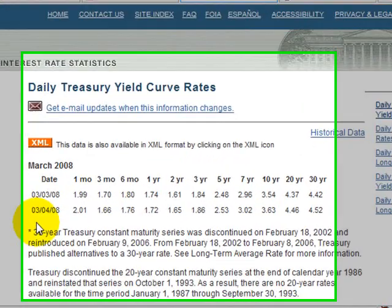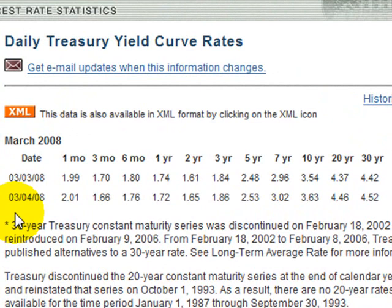I'm here at the U.S. Department of Treasury website where they publish daily treasury yield curve rates. So as of March 4th, 2008, I've got a yield on the one month maturity treasury bill of 2.01%.